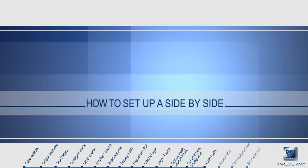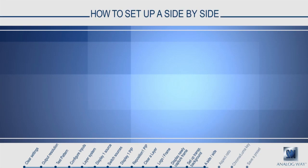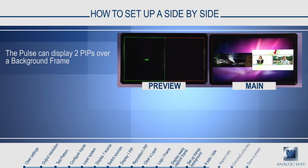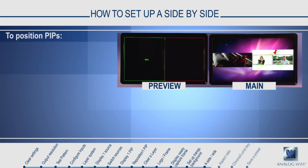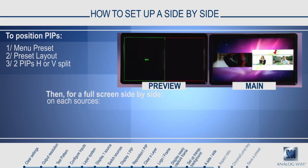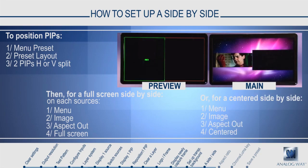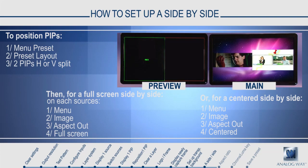How to set up side-by-side PIPs. To set up side-by-side PIPs, you can select two layers next to each other. Use the layer adjustments to resize and position the layers so that they are side-by-side. Depending on your choice of aspect ratio settings, you can have the layers appear centered in the window, full screen, or cropped. By using the transparent background feature, you can also see the background frame behind.